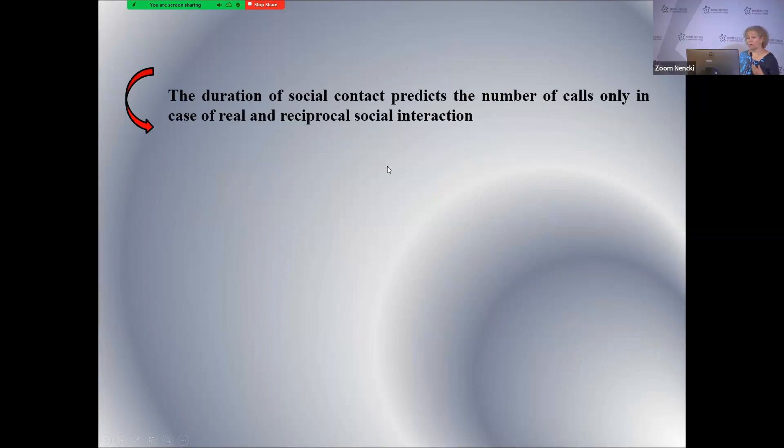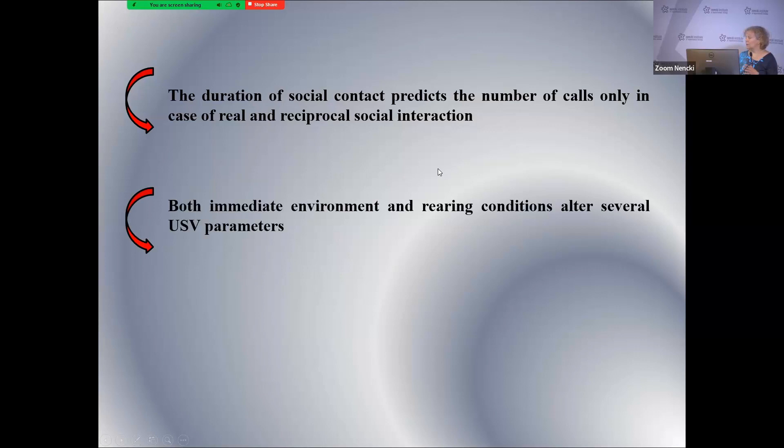So what we've seen is that the duration of social contact can predict the number of calls, but only in the case of real and reciprocal social interaction. Both the immediate environment in which we measure behavior and the rearing conditions can alter USV parameters in mice — at least in male mice.